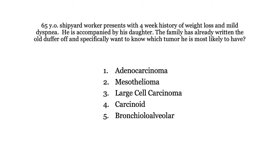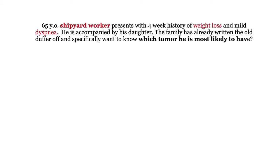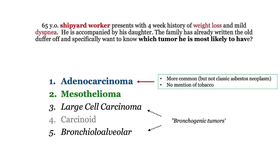Moving on to our next question. A shipyard worker with signs and symptoms of weight loss — that's it. They are telling you he has an asbestos exposure. The correct answer is adenocarcinoma. Of the bronchogenic tumors, it is most common. The key take-home: regardless of tobacco history, select a bronchogenic tumor as the most common asbestos-related tumor — it is far more common than mesothelioma. If they ask for the most characteristic tumor, then mesothelioma would be appropriate.